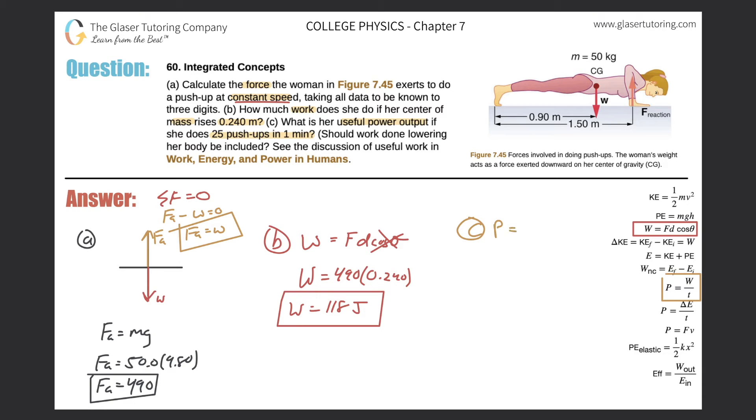Power is going to equal the work done divided by the time it takes. So what time is she doing these push-ups in? It says one minute, but remember we need time in seconds here, so that's simply just 60. Easy peasy.